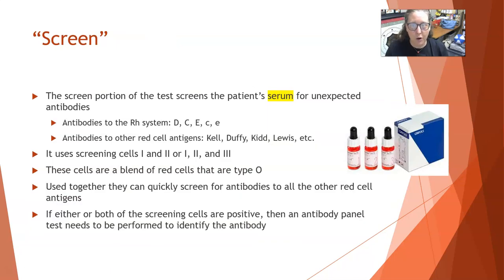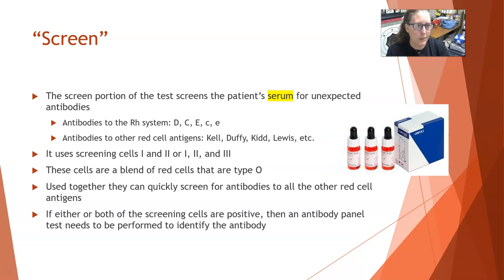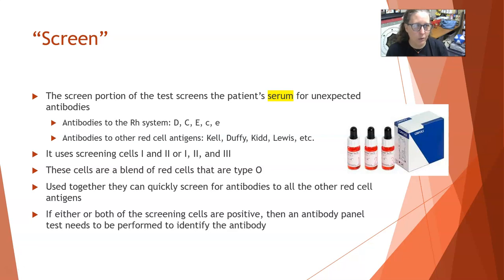The screen part of the type and screen tests the patient's serum for unexpected antibodies. We expect to find anti-B if they're type A — those are expected antibodies. Unexpected antibodies might include those from the Rh system, such as anti-D, anti-C, anti-E, anti-c, or anti-e. There could also be antibodies to other red cell antigens such as Kell, Duffy, Kidd, Lewis, and others. Screening cells one and two — or one, two, and three — are a blend of type O red cells that together cover all these unexpected antigens.